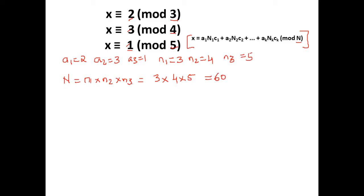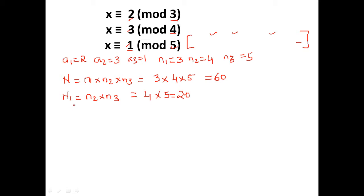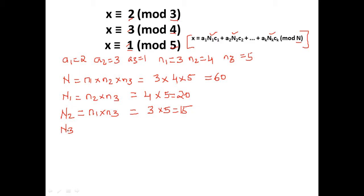Now compute the capital N_i values. a1=2, a2=3, a3=1, n1=3, n2=4, n3=5. Capital N1 = n2 × n3 = 4 × 5 = 20. Capital N2 = n1 × n3 = 3 × 5 = 15. Capital N3 = n1 × n2 = 3 × 4 = 12.